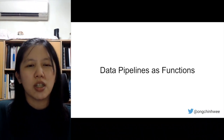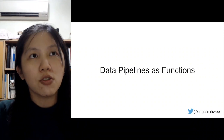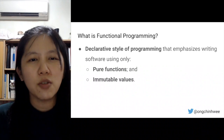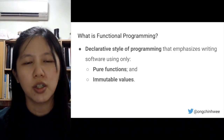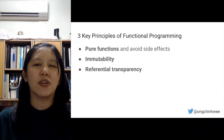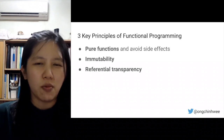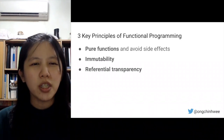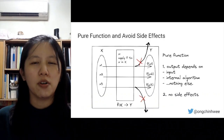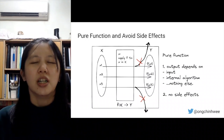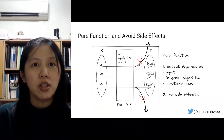The challenge is how do we design data pipelines that adapt well to changing business and technical requirements and ensure developer productivity. This brings us to the concept of using data pipelines as functions, which leads us to functional programming. Functional programming is a declarative style of programming that emphasizes writing software using only pure functions and immutable values. The three key principles are: using pure functions and avoiding side effects, the concept of immutability, and the concept of referential transparency.